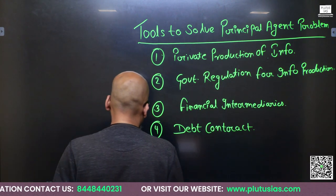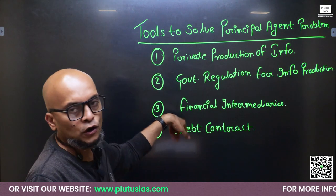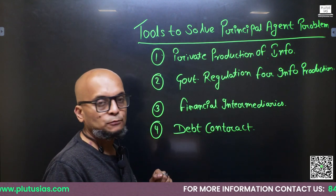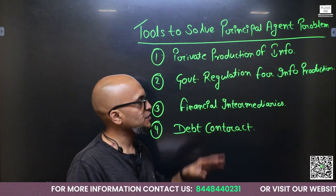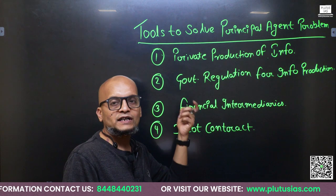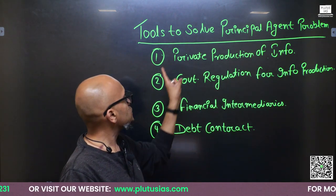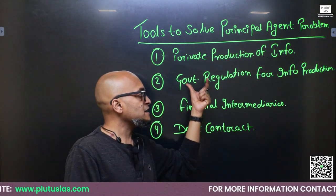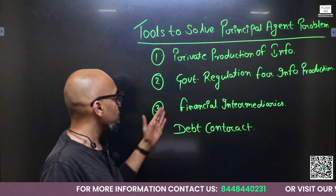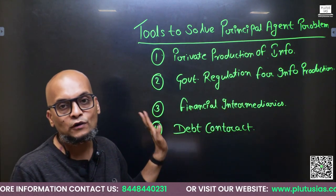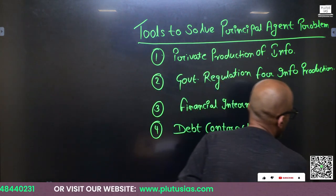How can we tackle this problem? There are mainly four tools. Tool number one is private production of information. Second is government regulation for information production. Third is financial intermediaries. And fourth is debt contract. Let us explore each tool one by one.